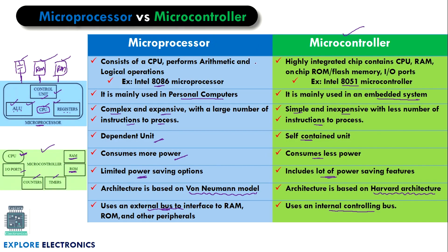To summarize the key difference: a microprocessor has only a CPU — that is, the ALU and registers. But a microcontroller has the CPU, RAM, ROM, and flash memory all on the same chip.